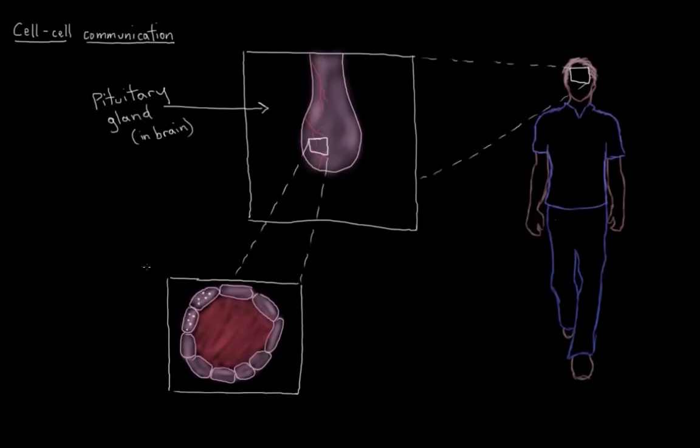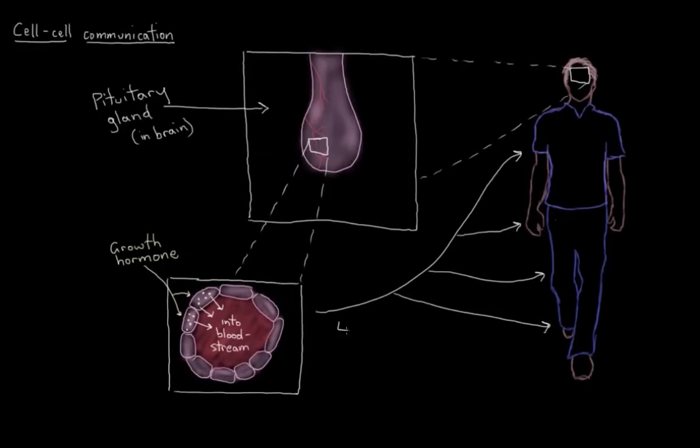And now our growth hormone can travel through the bloodstream and get to literally any place in the body. So every cell of your body has the opportunity to get this growth hormone message. It doesn't mean that every cell will necessarily respond to the message. Some cells just don't have the right proteins to bind certain hormones. But either way, you can see that this is a long-distance form of communication.